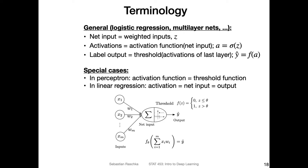To recap some terminology: the net input is just another word for the weighted inputs, and we use the symbol z for that. Activations are values from an activation function — an activation function takes the net input as input, and we use the letter a and the activation function sigma(z).